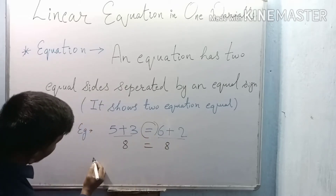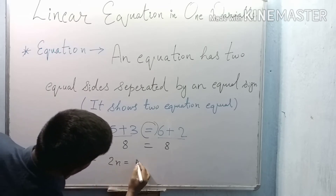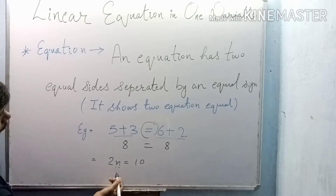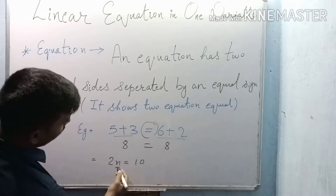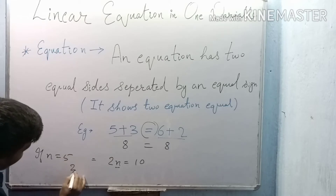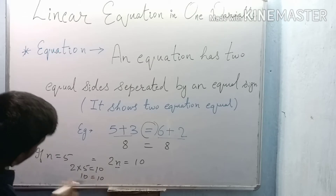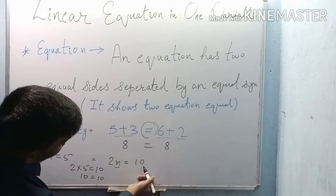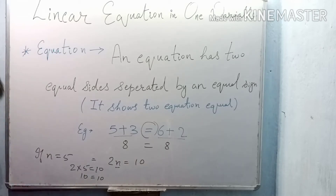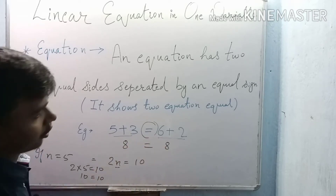Let's look at a second example: 2n equals 10. You have to put the value of n so that this equals 10. If n equals 5, then 2 into 5 equals 10, meaning 10 equals 10. Both sides — 2n and 10 — are separated by an equal sign. This is an equation.